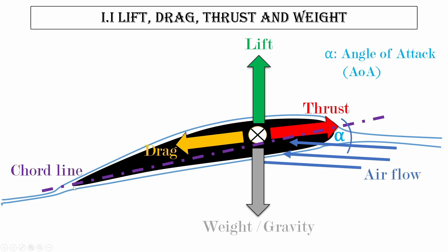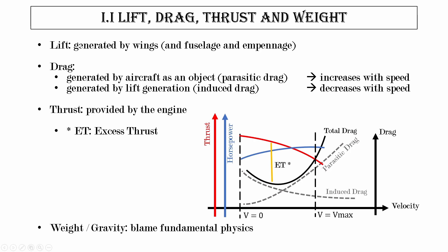A few definitions. The chord line is basically a connection of the trailing edge of the wing to the leading edge of the wing, to give you an idea how the wing is oriented. When we fly through air — or equivalently if we have a static airfoil and blow air across it, as in a wind tunnel — the angle between our wing's chord line and the general direction of the undisturbed airflow is what we call the angle of attack, or AOA, or alpha.